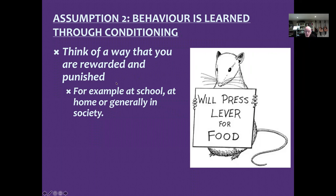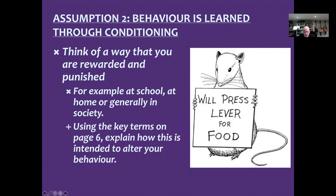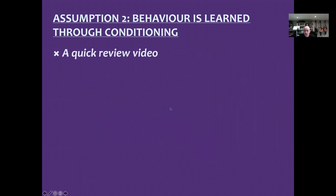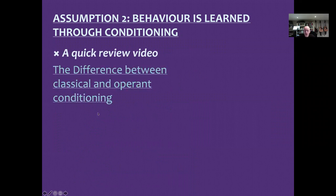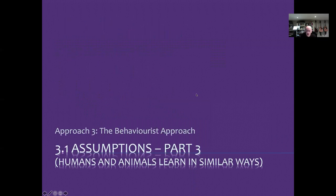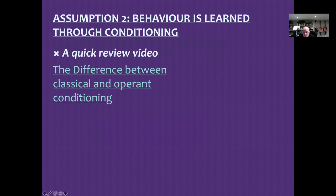Think about the ways we could be rewarded or punished at home, school, or in society generally. Explain how those rewards or punishments are designed to alter your behavior, and ask yourself how successful this is as a way of teaching people to do things. There's also a quick review video on the PowerPoint on Classroom that really spells out the difference between operant and classical conditioning, which is important for the quiz and for your exam. Okay, nice speaking to you — I'll see you at the next video.